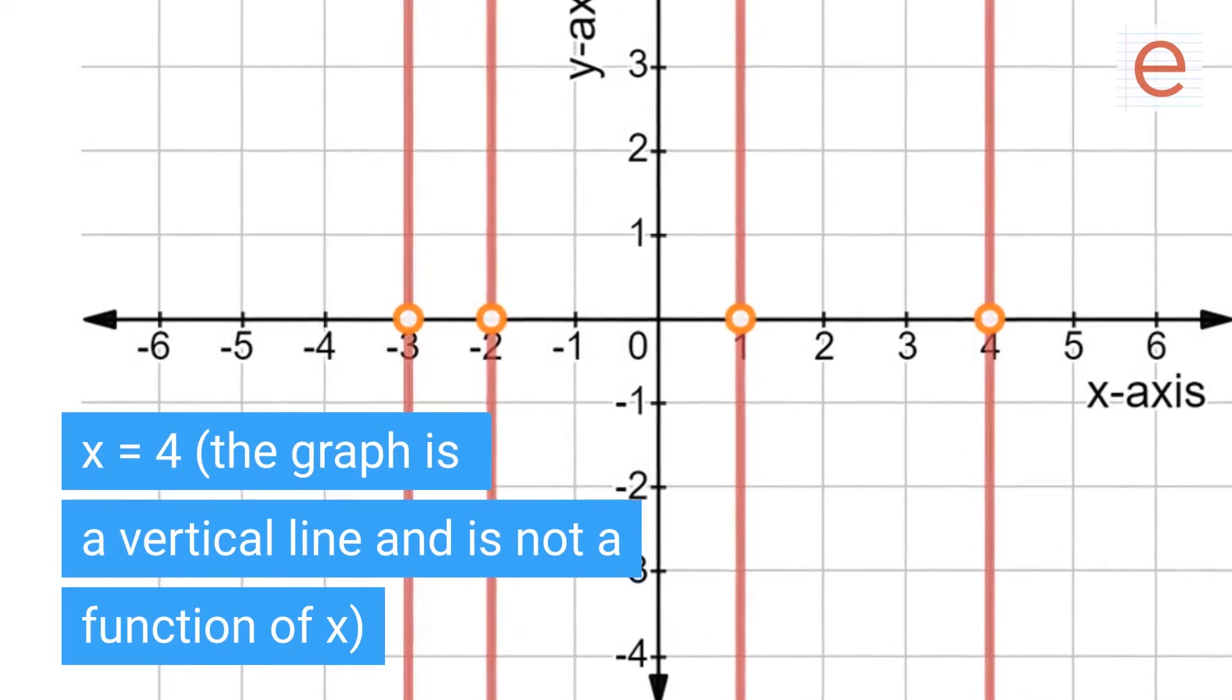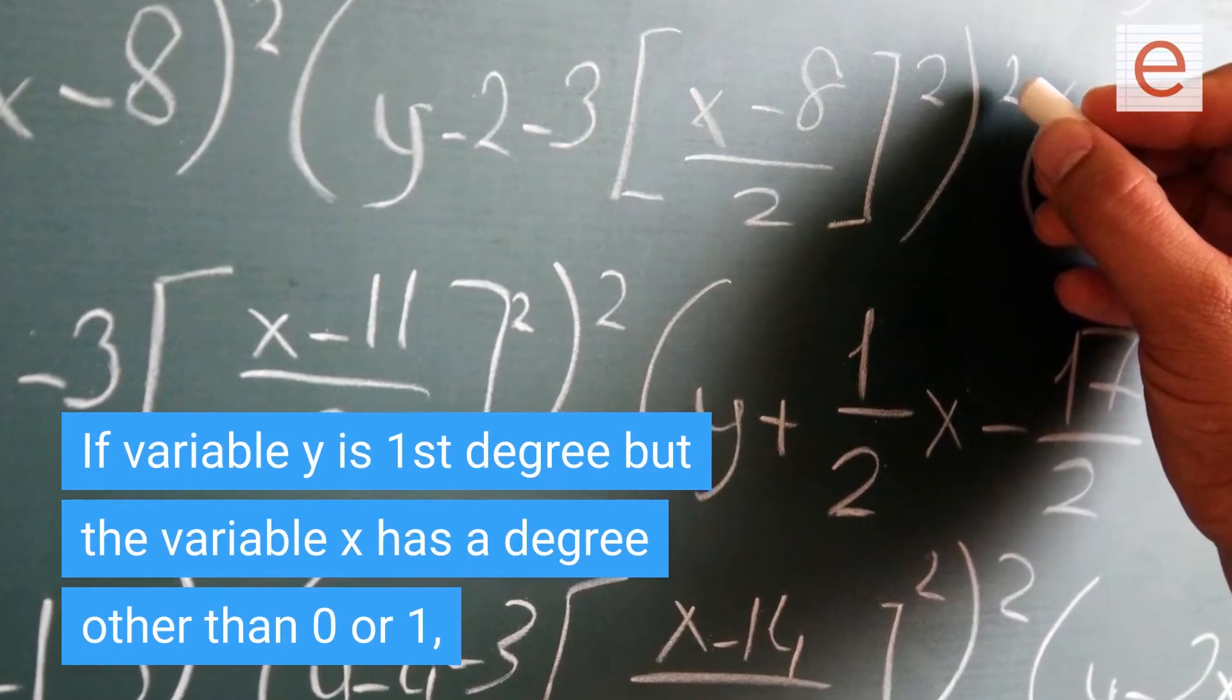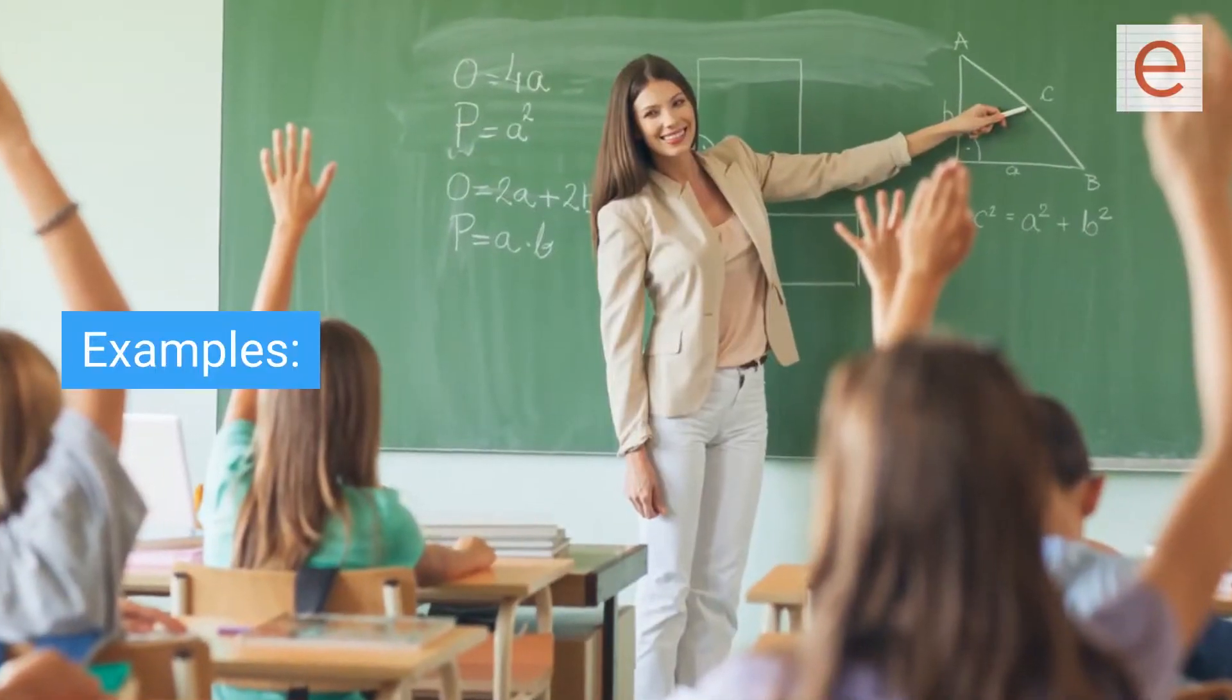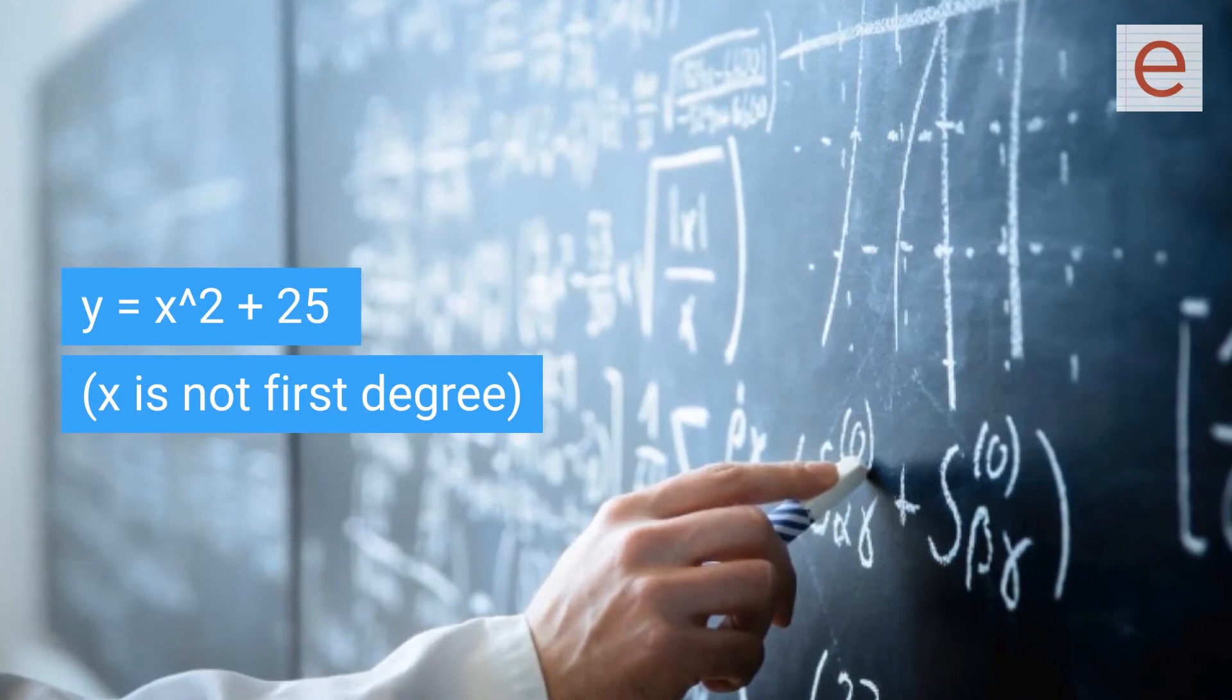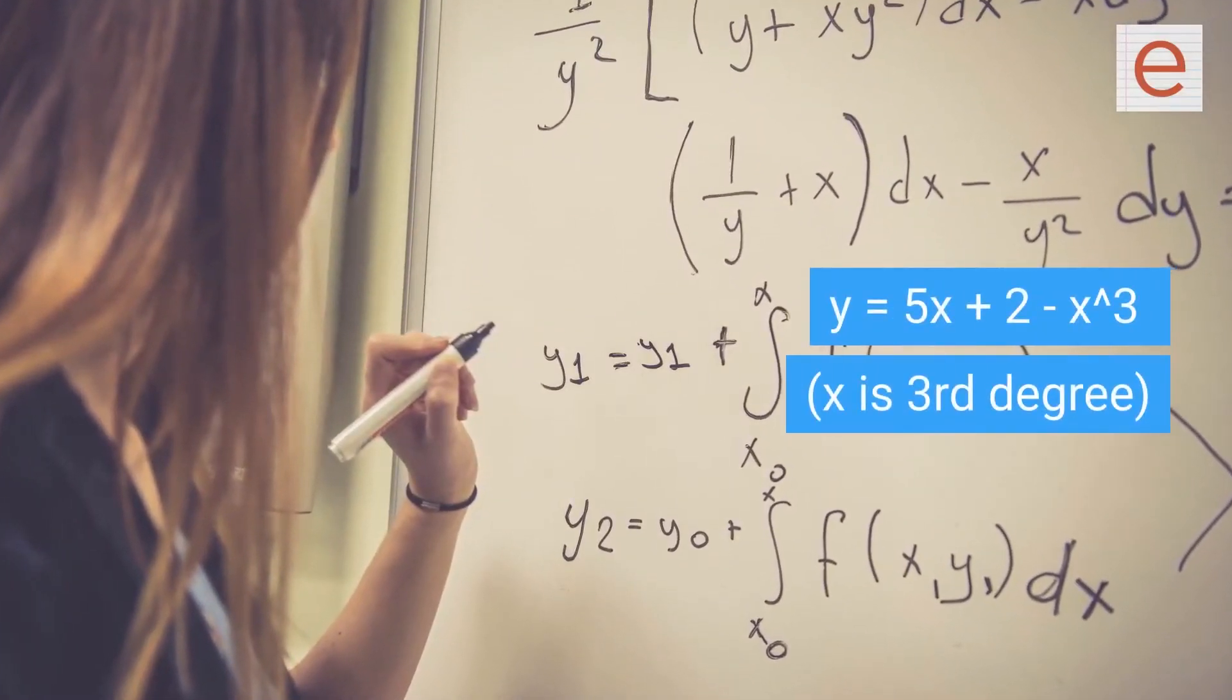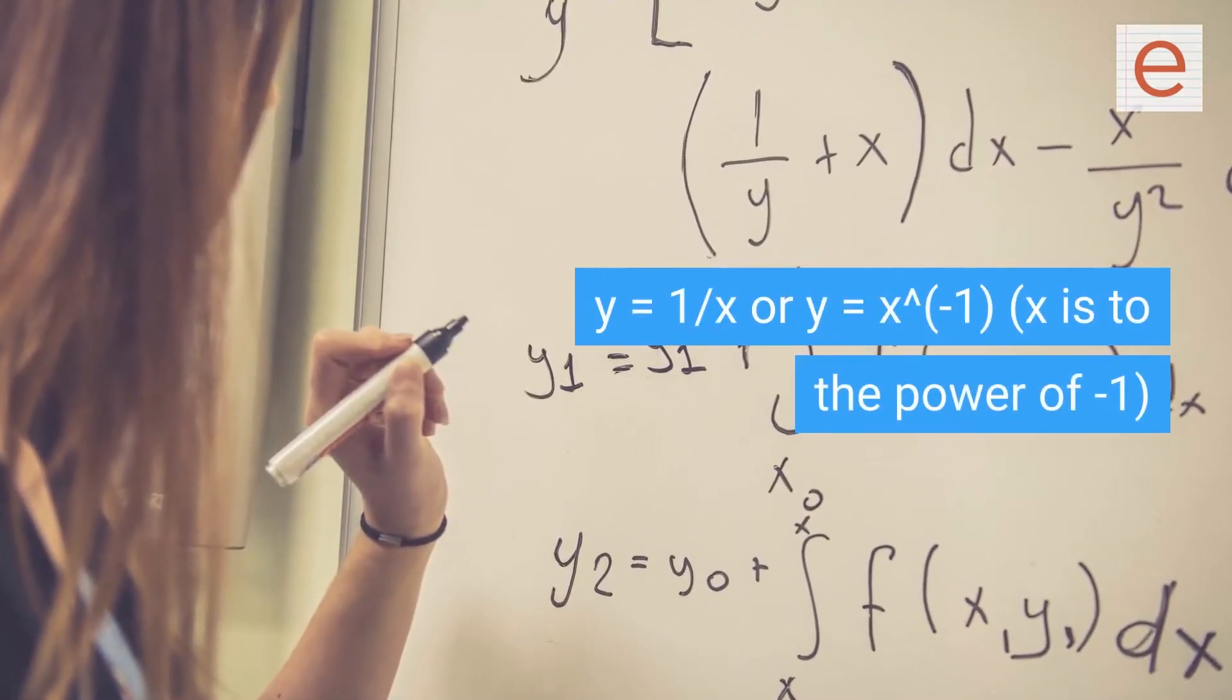If variable y is first degree but the variable x has degree other than 0 or 1, it will be a nonlinear function of x. Examples: y equals x² plus 25, x is not the first degree. y equals 5x plus 2 minus x³, x is third degree. y equals 1 over x or y equals x⁻¹.